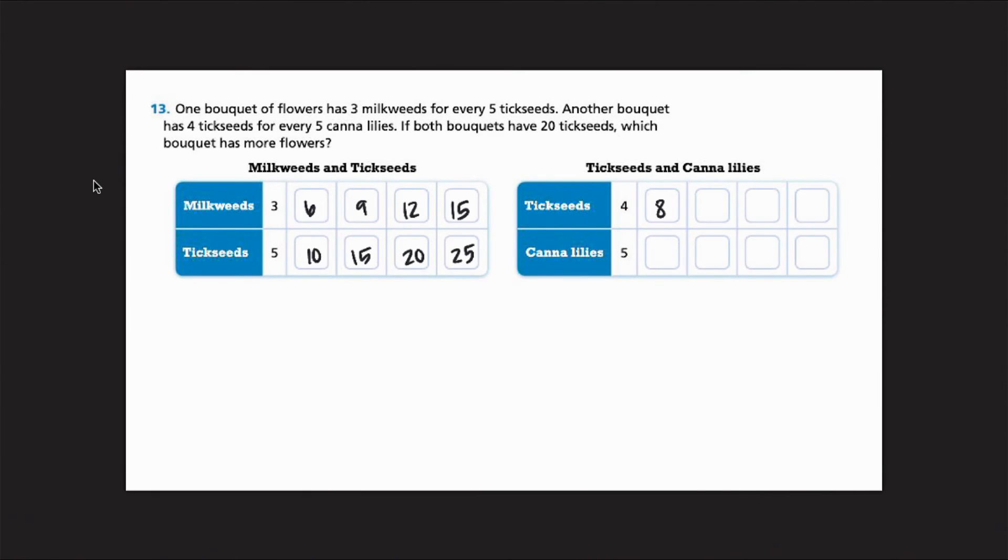Okay, four, eight, twelve, sixteen, twenty, and then ten, fifteen, twenty, twenty-five. Okay. Now, it tells us in our problem, it says, if both bouquets have 20 tick seeds, which has more flowers? So I'm looking for the one that says 20 tick seeds. So I'm going to say, here's tick seeds, here's 20. So I'm using this ratio.